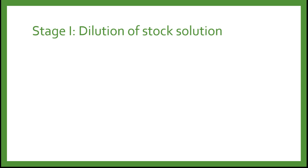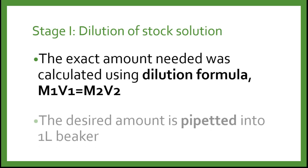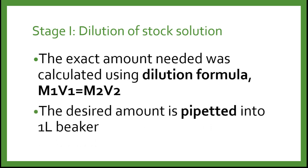Stage 1 of the media preparation is the dilution of stock solution. The exact amount needed is calculated using the dilution formula M1V1 = M2V2, and then the desired amount is pipetted into the 1-liter beaker if you are preparing 1 liter.